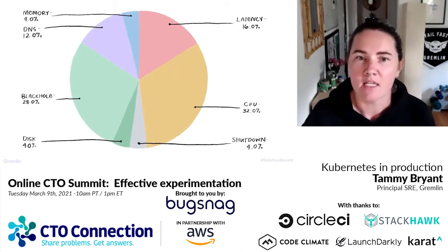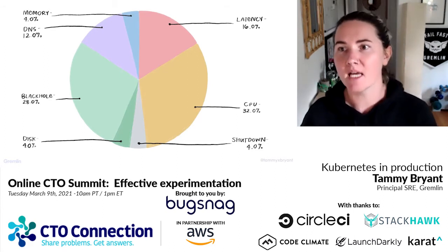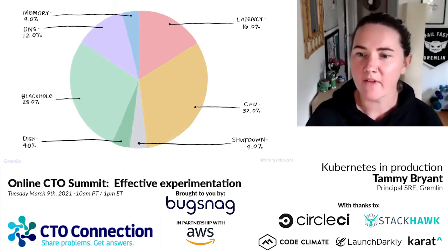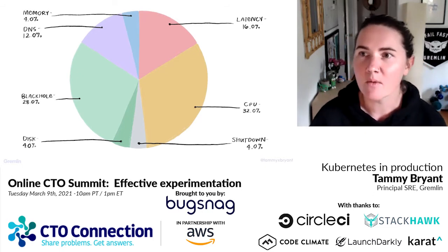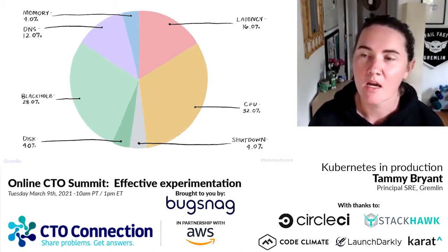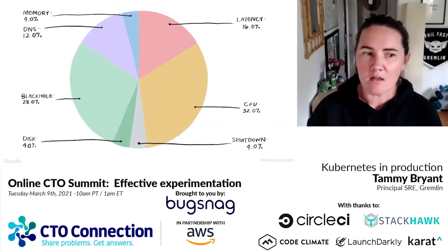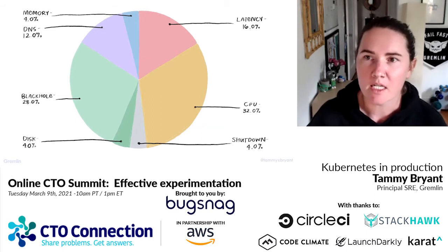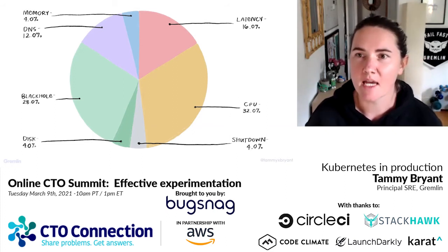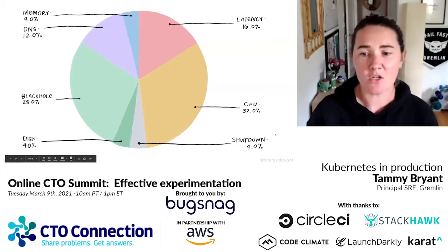Let's look at the AWS-specific data — only AWS-related Kubernetes outages. This is a bit different from the overall chart where it was an even 25% split between CPU and black hole. With AWS, CPU is an even bigger issue: 32% of problems reported when running Kubernetes clusters at scale on AWS. Black hole is 28%. Latency is actually a bit higher at 16%. DNS is still fairly high at 12%. There are no reported security issues. Disk and memory remain low. Shutdown is only 4%, which is very low — so I would focus a lot of efforts on CPU.